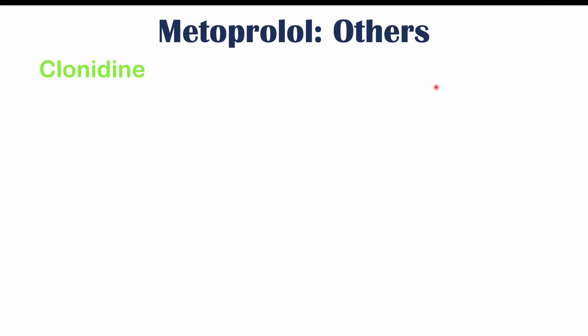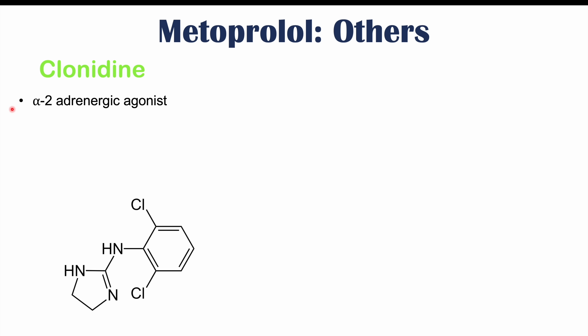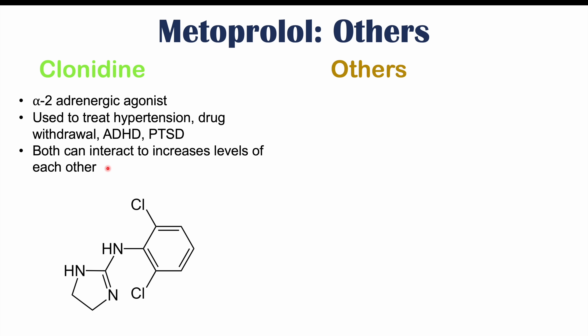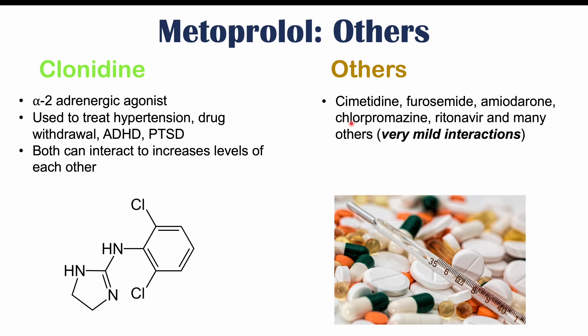Metoprolol can interact with a variety of other medications, including clonidine — an alpha-2 adrenergic agonist used to treat hypertension, drug withdrawal, ADHD, and PTSD. Both metoprolol and clonidine can increase levels of each other, causing increased side effects from both. Other interactions include cimetidine, furosemide, amiodarone, chlorpromazine, ritonavir, and many others, though these are generally very mild interactions.